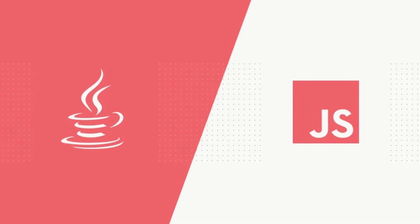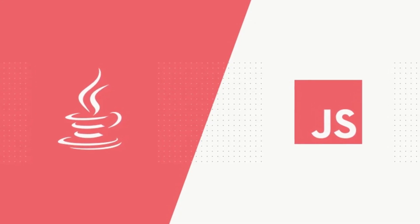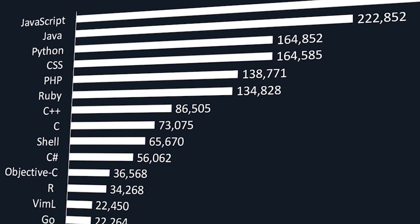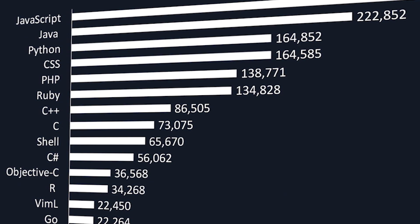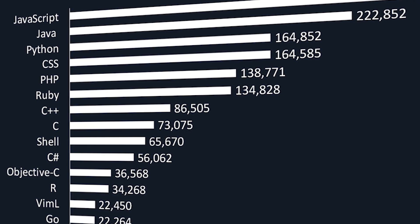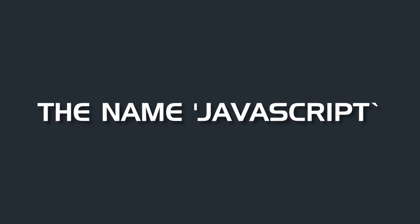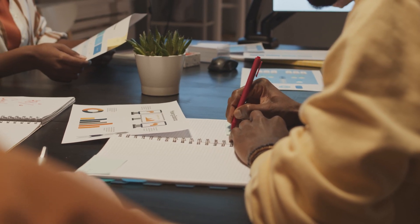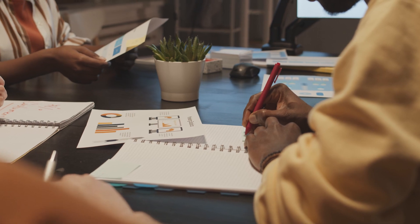You might also have heard speculations about JavaScript's relationship with Java. Besides the fact that both have been chart-toppers at one point or another, Java and JavaScript are two different languages. The name JavaScript was part of a marketing strategy by Netscape to pinch some of Java's popularity for themselves.